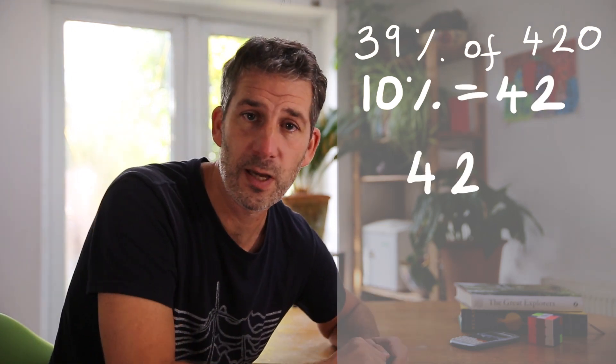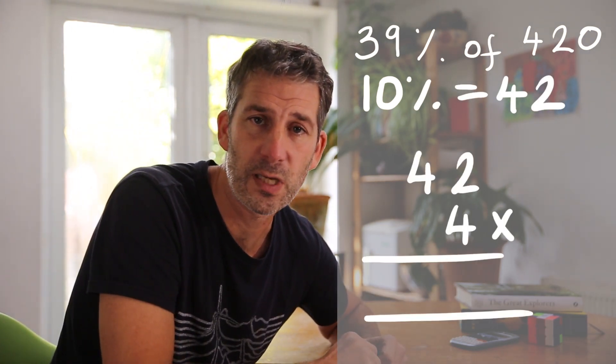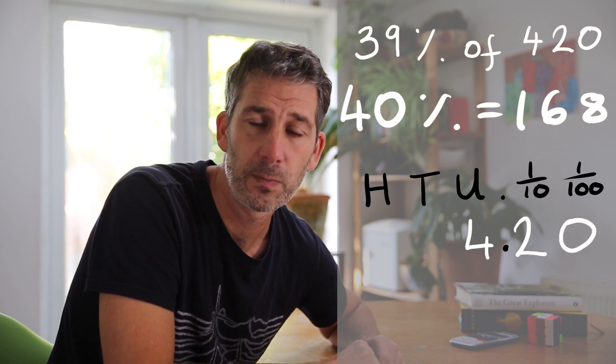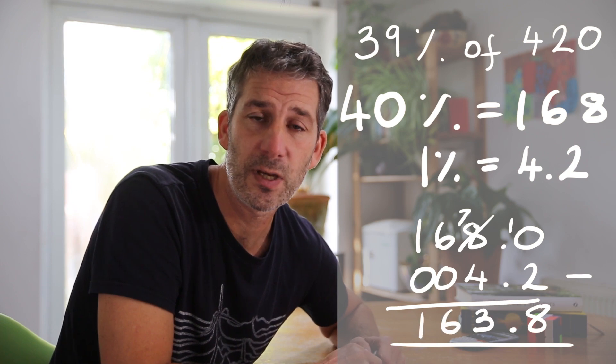So we're at 39% of 420, so I want to find 40% first of all, and I'm going to do that by finding 10%, which is 42, and then I'm going to multiply that by 4 to find 40%. So 42 times 4 is 168. And then you will remember to find 1% of something you divide by 100. So 1% of 420 is 4.2, and I've just got to remove that from 168. I've got to take it away from 168. So 168 take away 4.2 is 163.8.